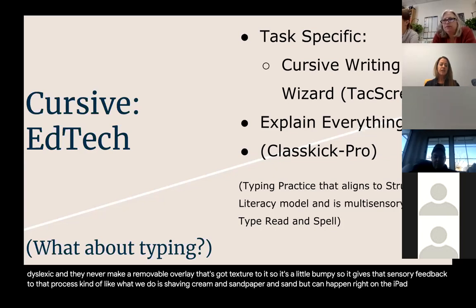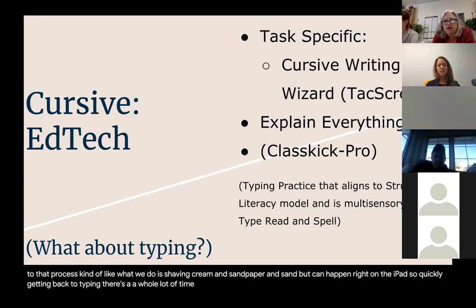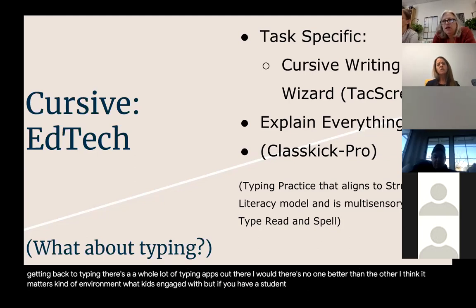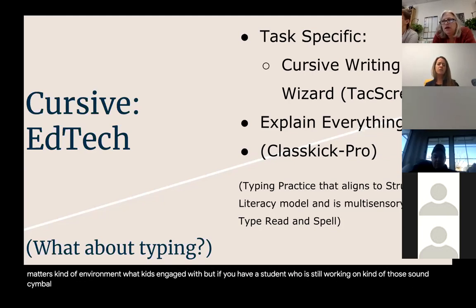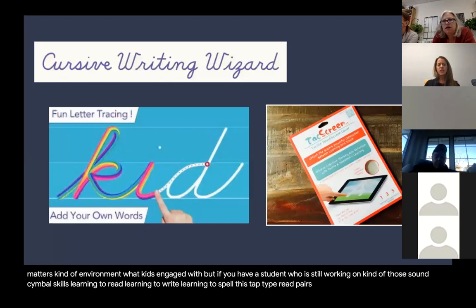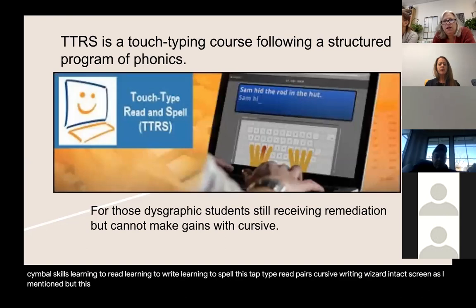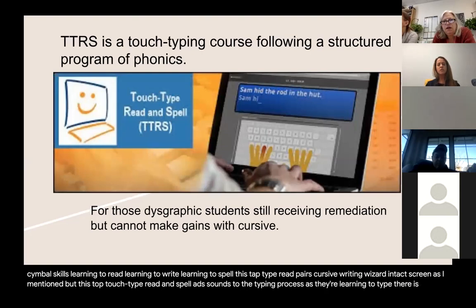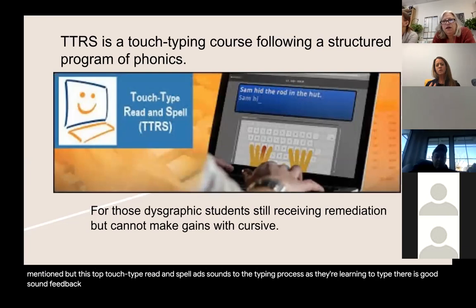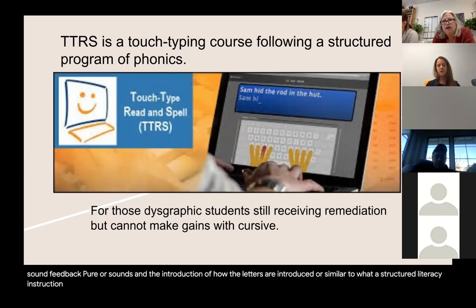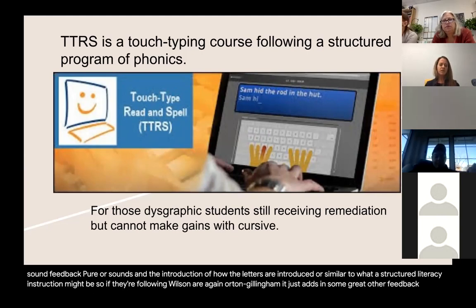Getting back to typing: there are a whole lot of typing apps out there, and no one is necessarily better than another — it depends on the environment and what kids engage with. However, if you have a student still working on sound-symbol skills, learning to read, write, and spell, Touch-Type Read and Spell adds sounds to the typing process. It provides solid sound feedback with purer sounds, and the introduction of letters aligns with structured literacy instruction such as Wilson or Orton-Gillingham — so it adds great additional feedback separate from a typical typing program.